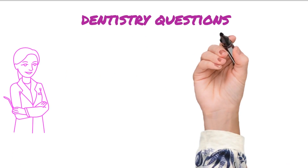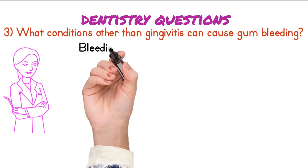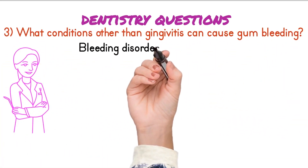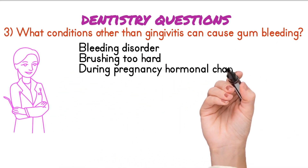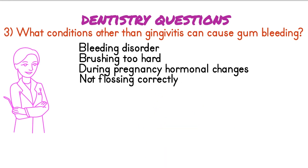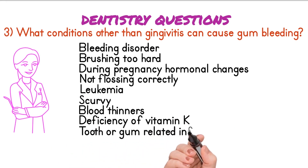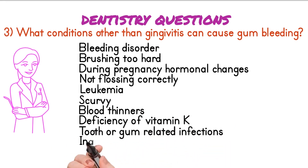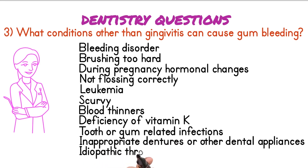What conditions, other than gingivitis, can cause gum bleeding? Bleeding disorder, brushing too hard, hormonal changes during pregnancy, not flossing correctly, leukemia, scurvy, blood thinners, deficiency of vitamin K, tooth or gum-related infections, inappropriate dentures or other dental appliances, and idiopathic thrombocytopenic purpura.